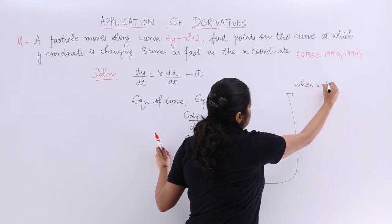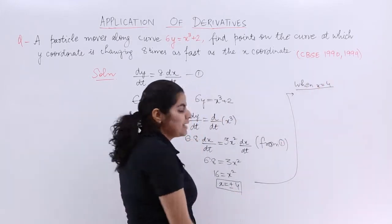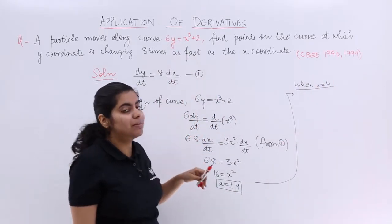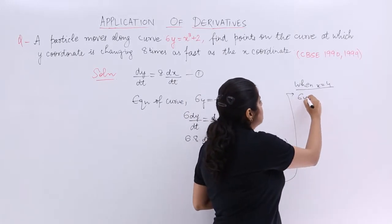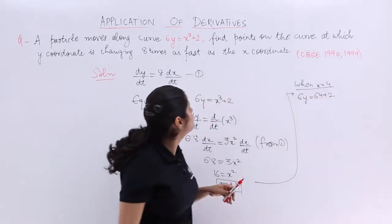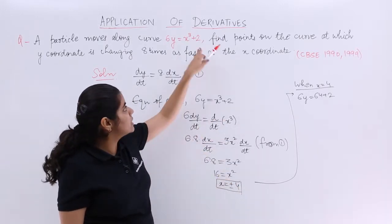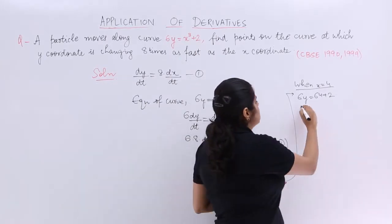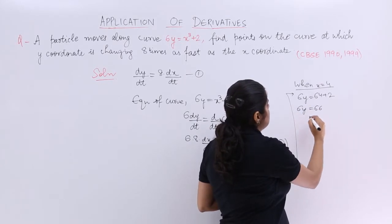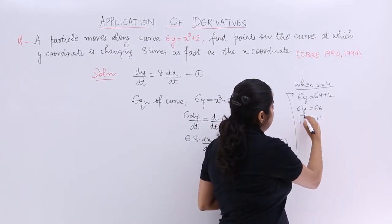When x equals 4, when your x is plus 4, what is the value of y you have to compute? 6y equals 64 plus 2. 4 cubed is 64 plus 2. So 6y equals 66. Y equals 11.